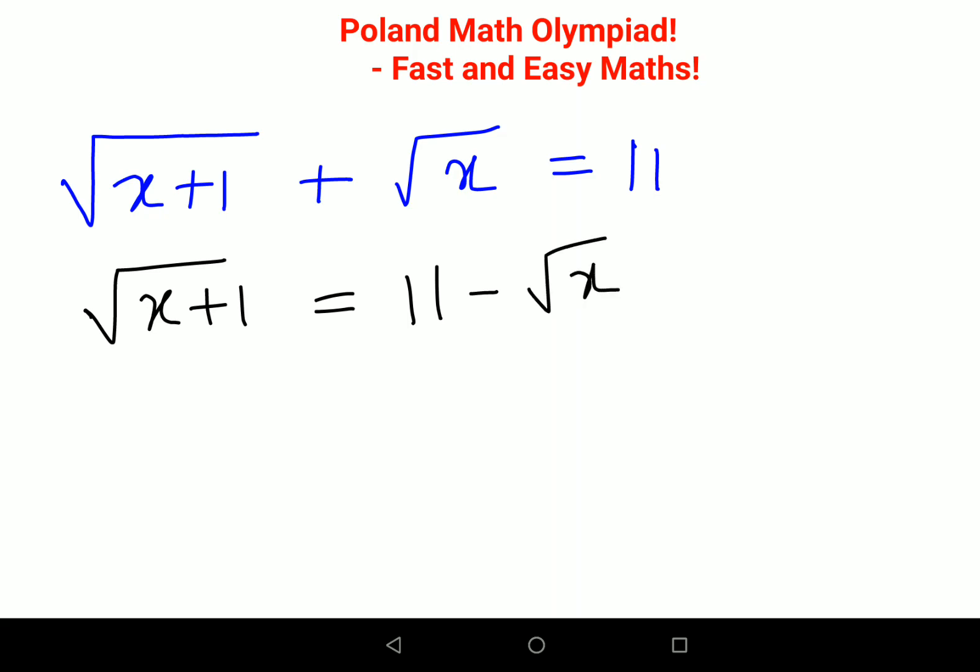Now, as we all know, to remove the roots we need to square both sides. So this gets you x plus 1, because the root and the square will cancel itself. And here you have 121 minus 22 root x plus x.